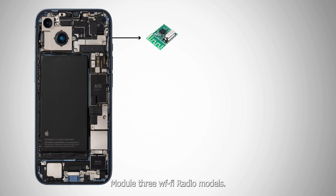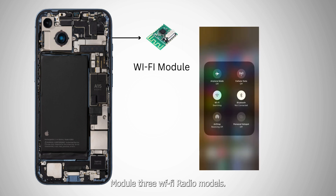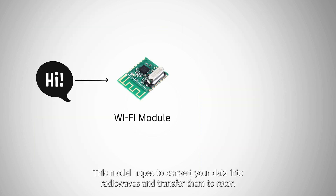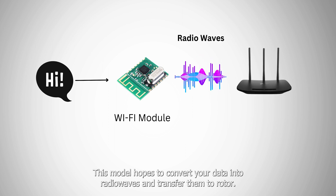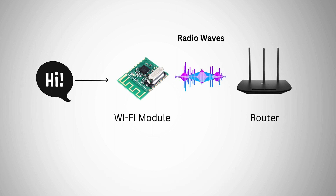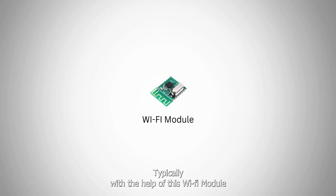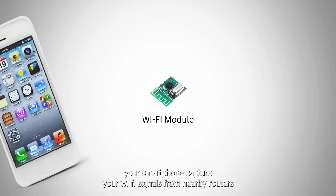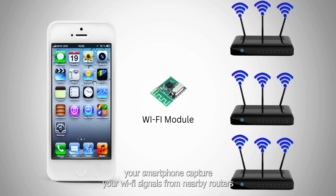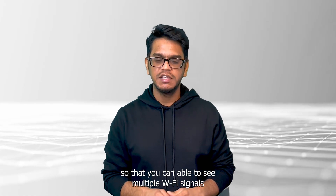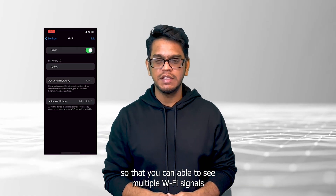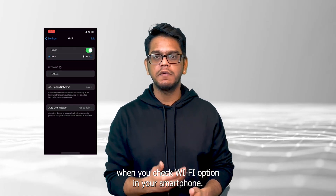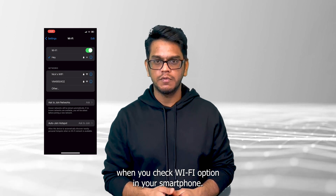Module 2 is the Wi-Fi radio module. Whenever using a Wi-Fi network, this module helps to convert your data into radio waves and transfer them to the router. With the help of this Wi-Fi module, your smartphone captures Wi-Fi signals from nearby routers. That is why you can see multiple Wi-Fi signals when you check the Wi-Fi option in your smartphone.